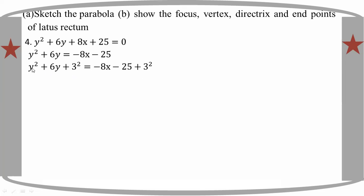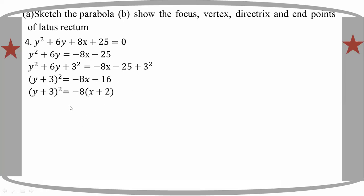If you have y plus 3, the whole square is minus 8. So if you have (y plus 3) whole square is minus 8, and comparing to (y minus k) whole square is equal to minus 4p times x.